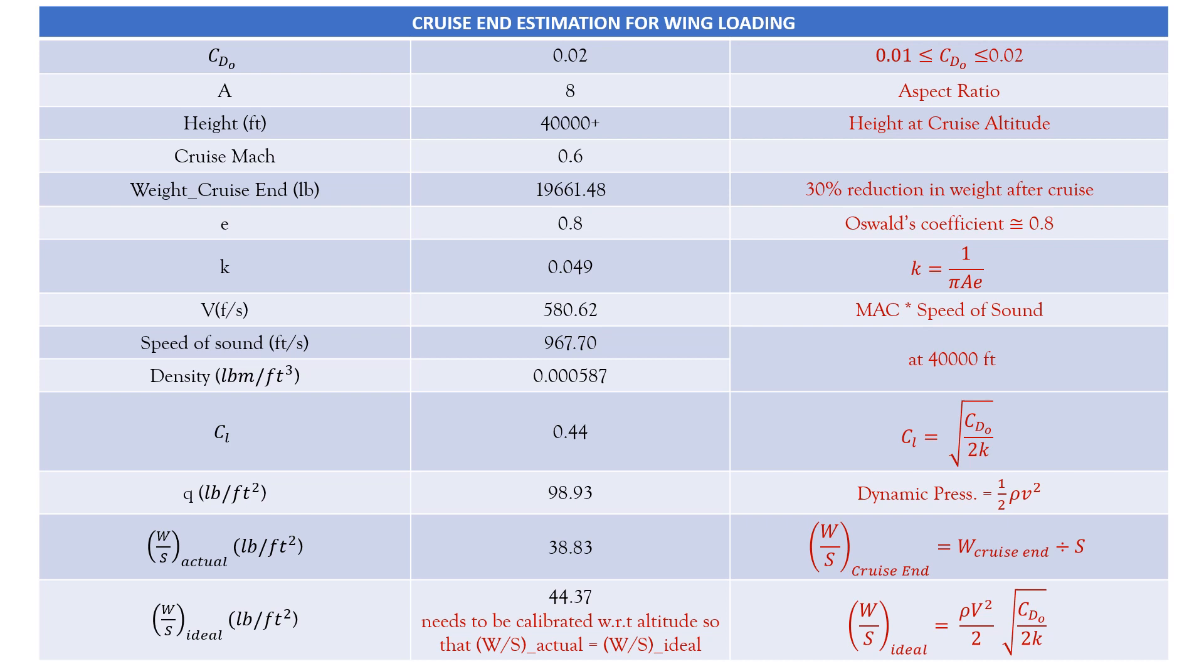Now at the lower wing loading, the tendency of the aircraft will be to increase altitude to where the lift again balances the weight. To determine where this occurs, the altitude input under cruise end can be changed. The objective is to find the altitude where W by S ideal equals W by S actual. So for this design, we will get approximately an altitude above 40,000 feet.